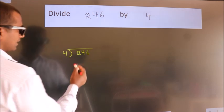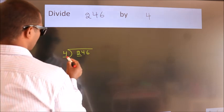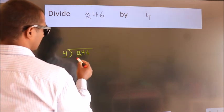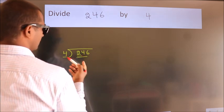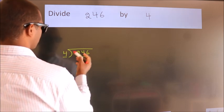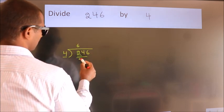Next. Here we have 2, here 4. 2 smaller than 4. So we should take 2 numbers, 24. When do we get 24? In 4 table, 4, 6, 24.